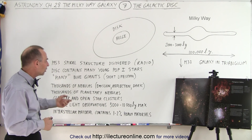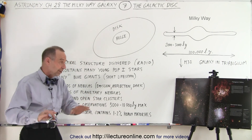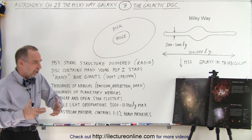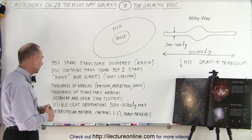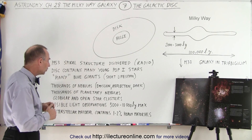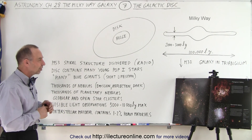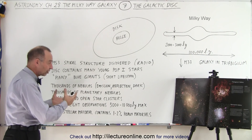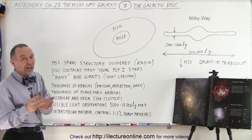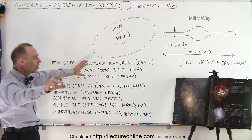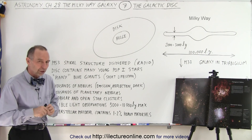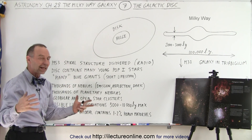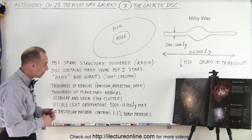The thousands of nebulas include emission nebulas, reflection nebulas, dark nebulas — they're all there. There are also thousands of planetary nebulas, which are the end result of normal-sized stars that shed their outer layers. We also have a lot of globular and open star clusters. The globular clusters are enormous groupings of stars; open clusters are more spread out with fewer stars in each. All throughout the disk you find open clusters and some globular clusters. The globular clusters form a spherical swarm around the galaxy, including the disk and the bulge.